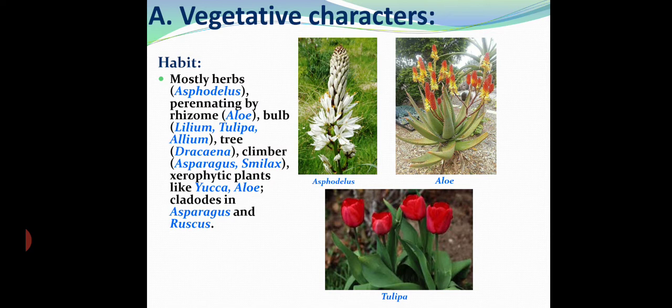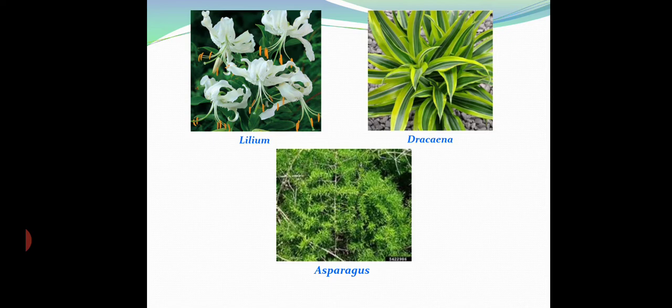Climbers such as Asparagus mylax are also present. Asparagus means Chadavari. Some members show xerophytic adaptations, like Yucca and Aloe, which grow in very dry areas and hold water content in the form of mucus. Cladodes are seen in Asparagus, appearing as scale leaves, and Ruscus has phylloclades. These represent interesting variations in the vegetative characteristics of this family.